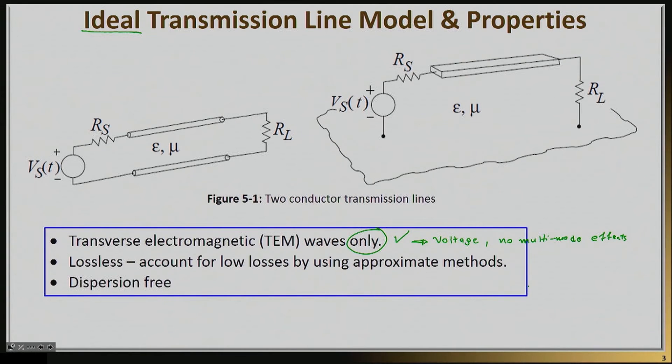The second critical idea is that this transmission line is purely lossless. That means that the wave can propagate without experiencing any loss.